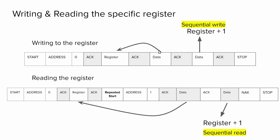Most I2C devices support sequential write and sequential read. If we send another data byte to the slave, it will be written to the register located just after the one we specified. So if we write data to register 5, the next data will go to register 6, then register 7, and so on. We can write data to sequentially located registers using this procedure.